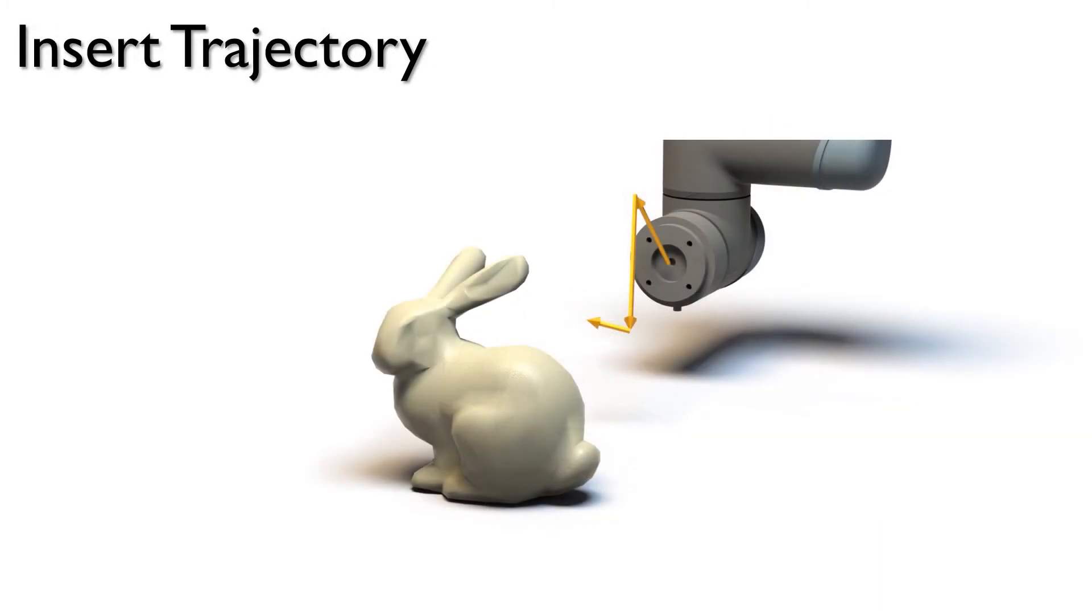The insert trajectory is represented as a list of keyframes. Each keyframe is the state of the robot arm in joint space. Likewise, intermediate keyframes are to be optimized.